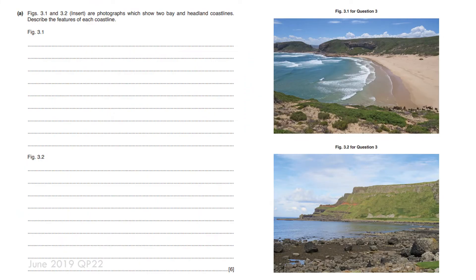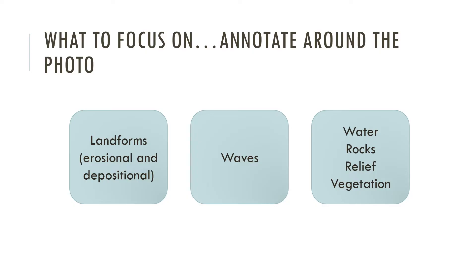Here is the first full example of a photograph interpretation question describing the features of each coastline that you can see. How would you approach this? First, focus on three key areas: the landforms, what the waves are doing, and other features such as the water, rocks, relief and vegetation. Before you answer the question, annotate or label around the photograph as many different features as you can see based on these three areas.